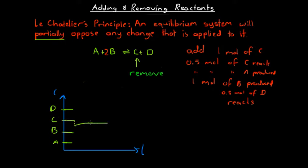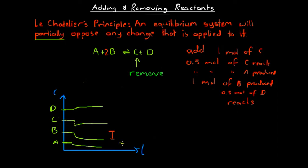Because C and D have the same coefficient, D increases by the same amount as C. However, B has a coefficient of 2, so because there's a net forward reaction producing C and D, the concentration of A and B will decrease, and B will decrease by twice as much as C increases. So the change in B is twice the value of the changes in C and D — those changes are each half the change seen in B.